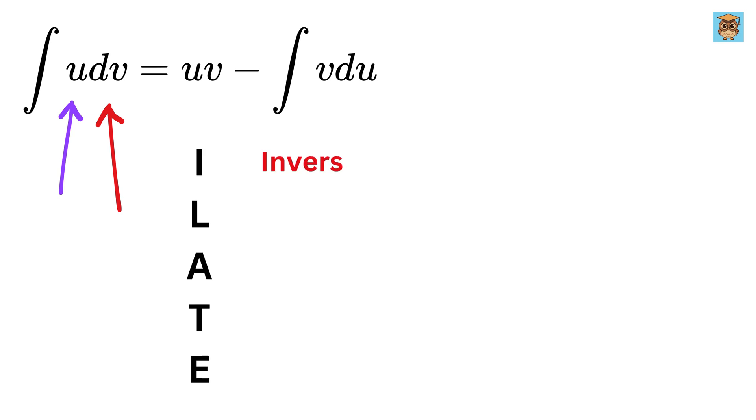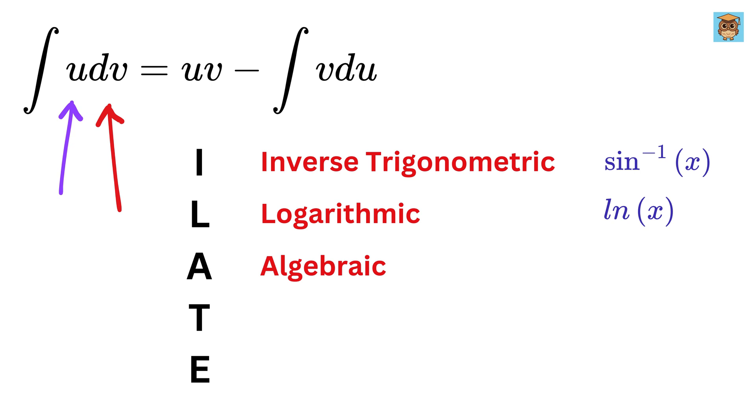I stands for inverse trigonometric functions, like the inverse of sine of x. L stands for logarithmic functions, like the natural log of x. A stands for algebraic functions, like 2x or x squared.